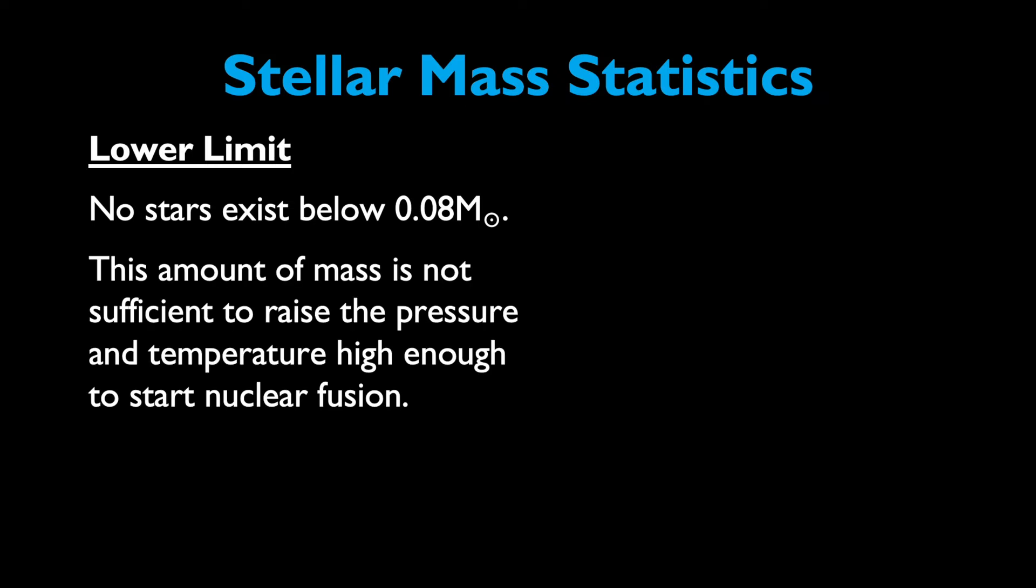So we have an idea now of some of these stellar mass statistics, so let's look at the details that explain why the limits are what they are. At the lower end, no stars exist below 0.08 solar masses. That's because a star with a mass lower than that amount does not have enough mass to raise the temperature and pressure levels in its core to kick-start nuclear fusion. We call these failed stars brown dwarfs.